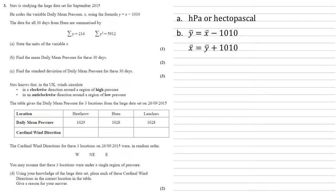Rearranging this, we get x bar equals y bar plus 1010. Y bar equals the sum of y over how many days we've got, so 214 over 30. If we do that and add on the 1010, we get 1017.1.